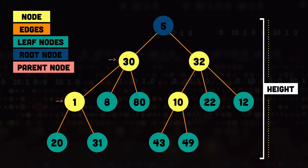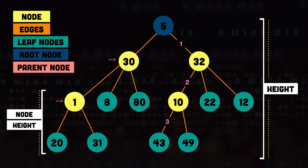Next we have the height of the tree, which is the maximum number of edges from the root node to a leaf node. Looking at this tree, the farthest nodes from the root are 20, 31, 43, and 49, each at a distance of 3, so the height of this tree is 3. We also have the node height, which is the maximum distance from a node to a leaf node in that node's subtree. Node 1 has a height of 1, and node 30 has a height of 2 because the maximum distance from node 30 to leaf nodes 20 and 31 is 2.